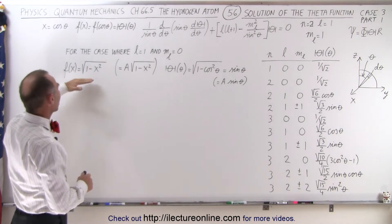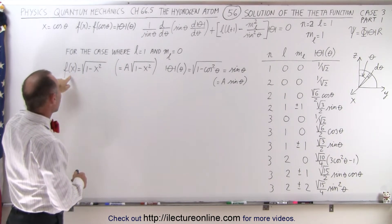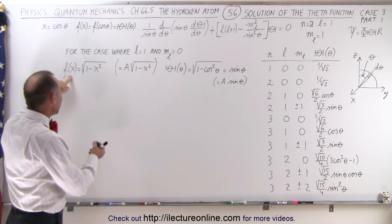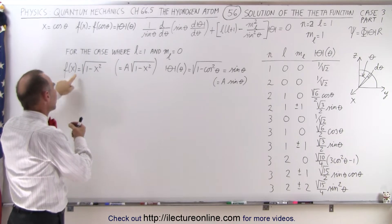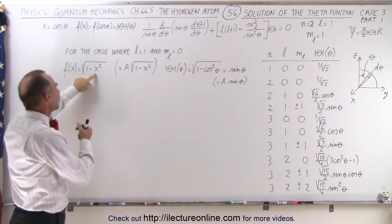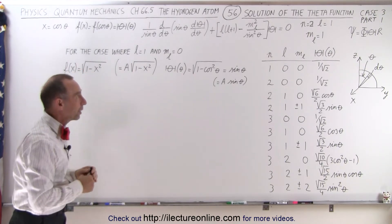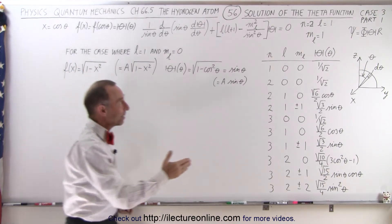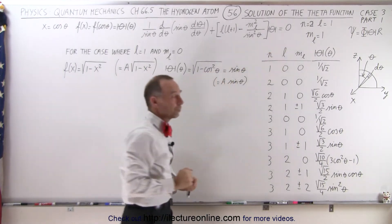We saw in a previous video that the solution for the f function was equal to the square root of 1 minus x squared, in the case that L equals 1 and M sub L equals 1.